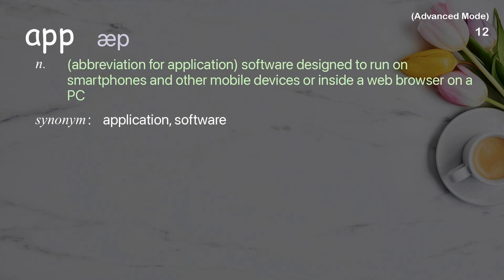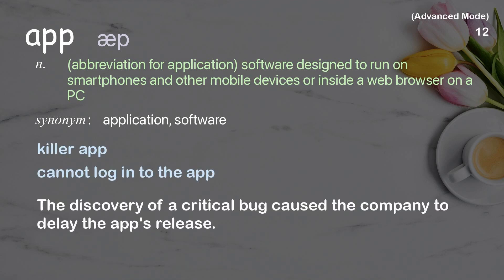App: abbreviation for application; software designed to run on smartphones and other mobile devices, or inside a web browser on a PC. Examples: killer app, cannot log into the app. The discovery of a critical bug caused the company to delay the app's release.